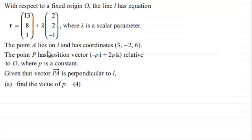The point A lies on l and has coordinates (3, -2, 6). And the point P has position vector (-pi + 2pk) relative to O, where p is a constant.